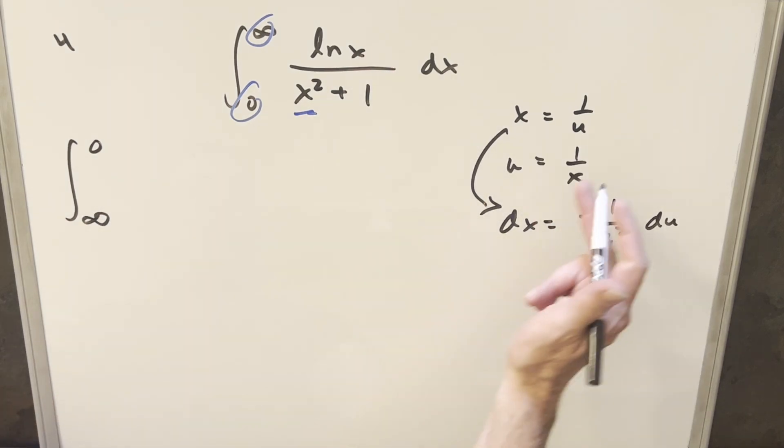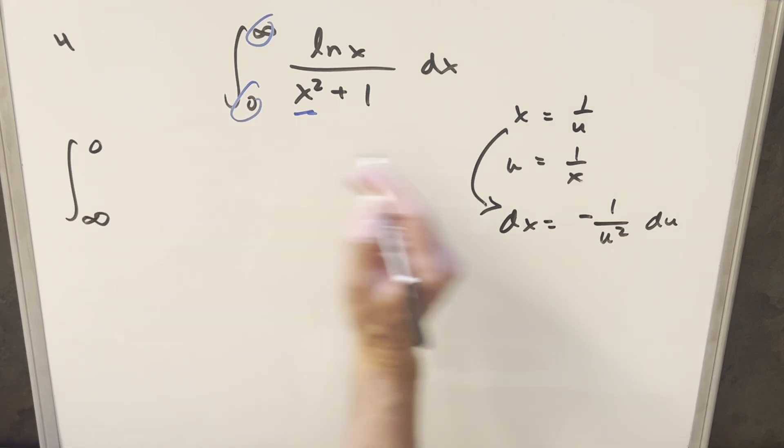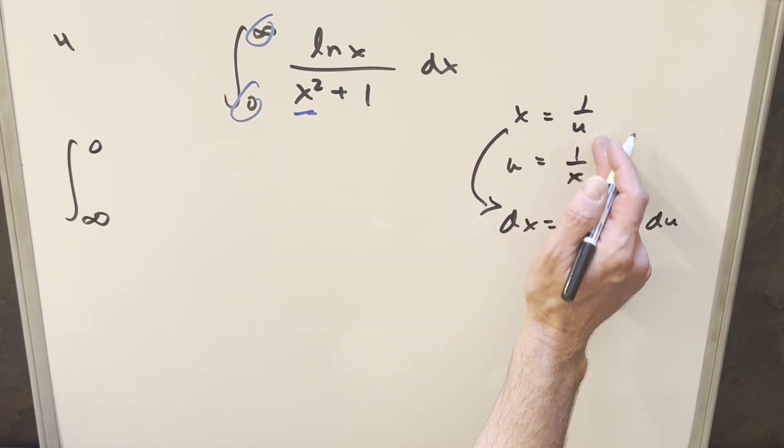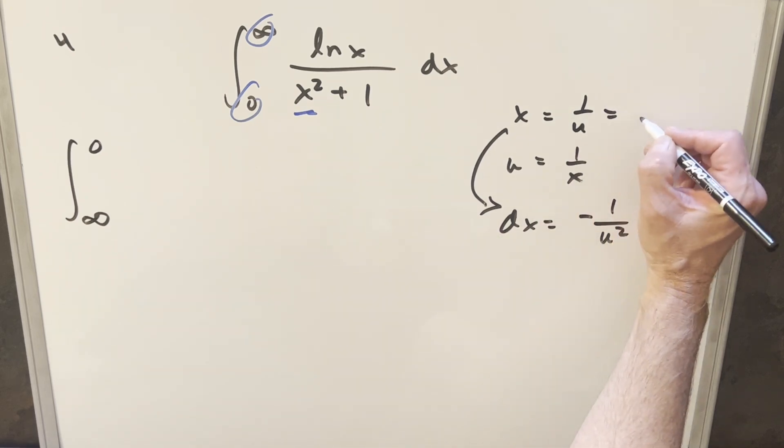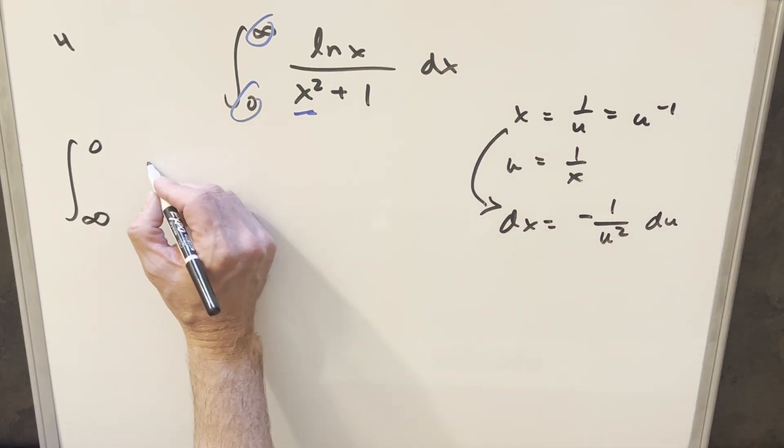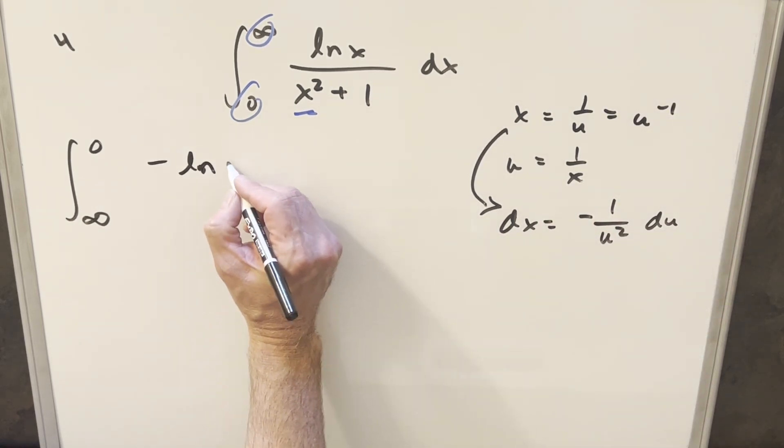Then for natural log x, plug in right here. So when we do that, we're going to have natural log one over u. I can actually write that because this is the same thing as u to the minus one. So with log properties, I can write this as minus natural log of u.